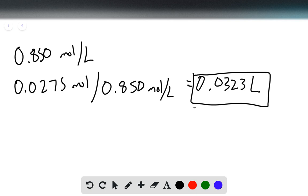and that would be the volume of K2Cr2O7 required to react with 5.25 grams of copper.